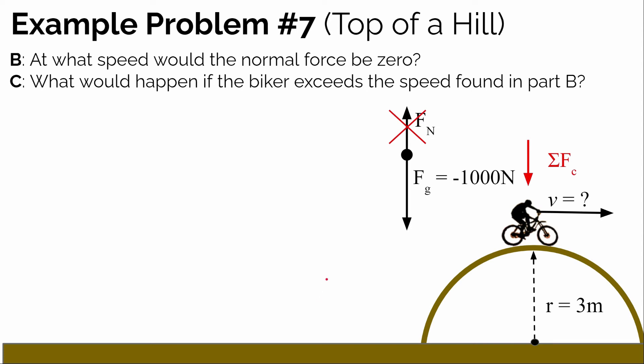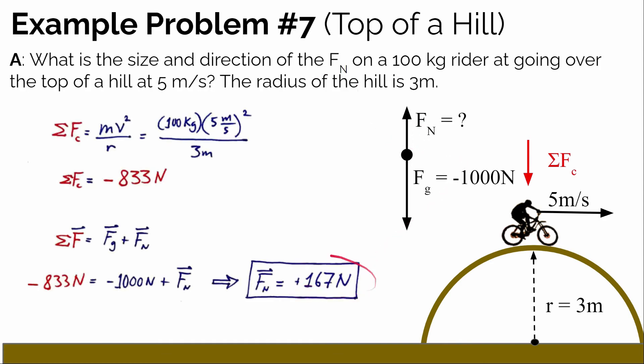The next question is: at what speed would the normal force be zero? The normal force is already much smaller than what the biker is used to — only 167 newtons. If they go over the hill even faster, they feel lighter still. There must be a speed at which the biker feels essentially weightless. This isn't because their weight disappears — gravity is still pulling on them. They feel weightless when the normal force is essentially zero, meaning there's no force pushing up on them.